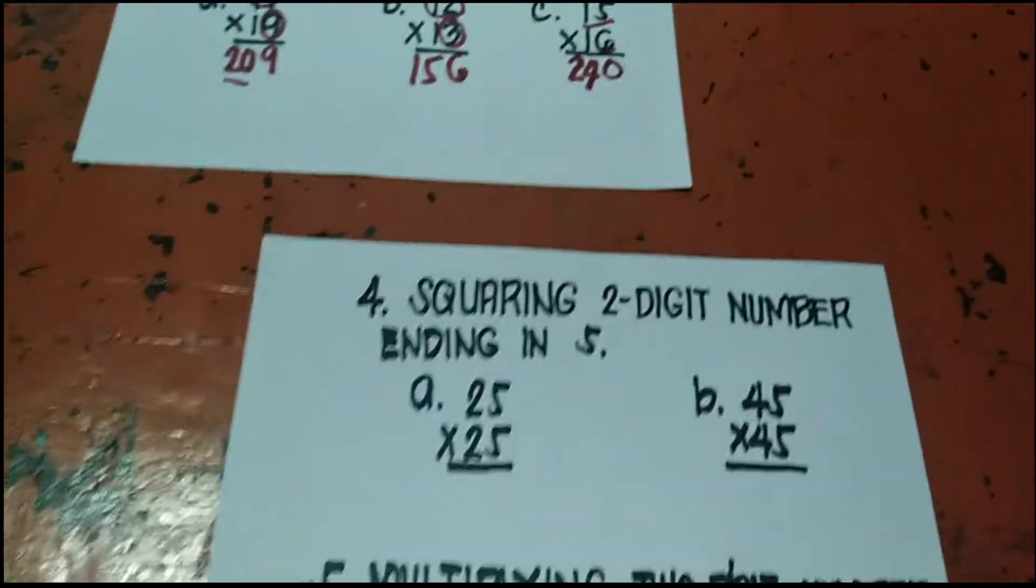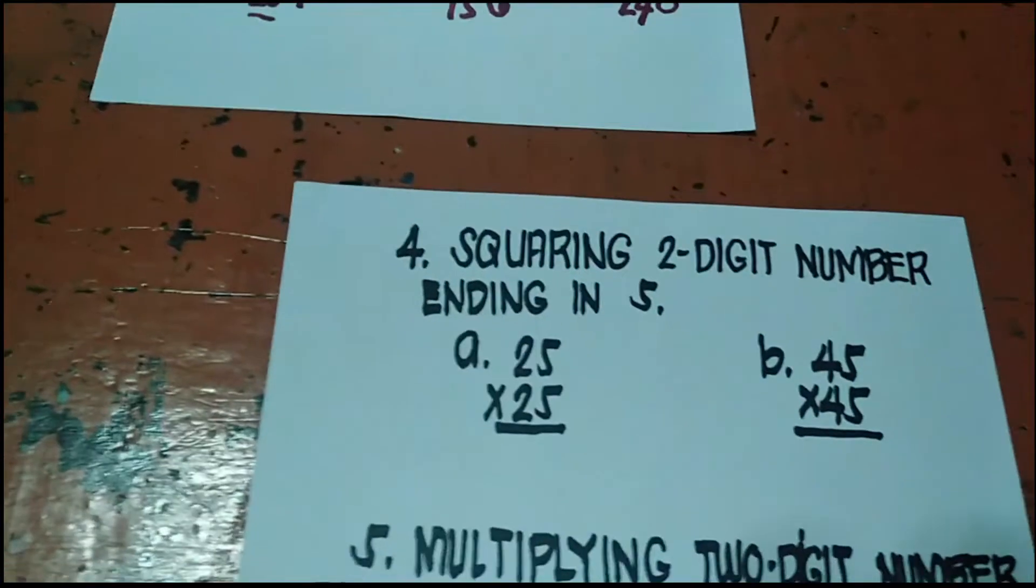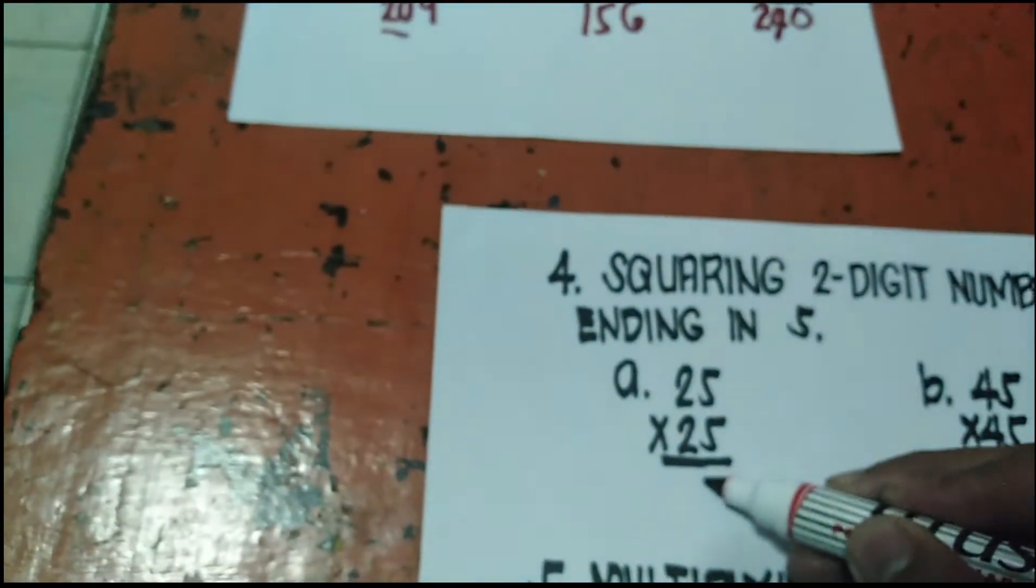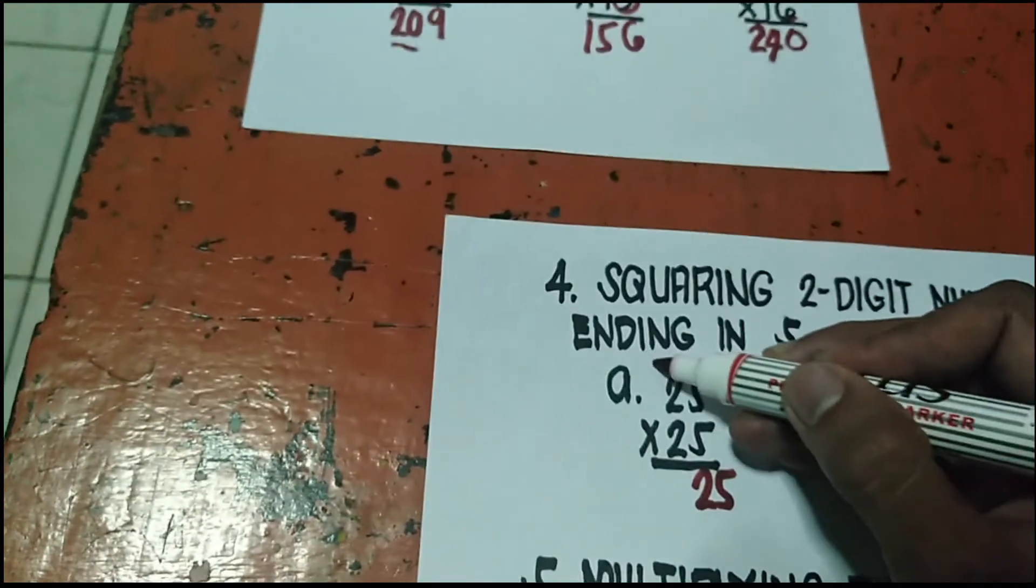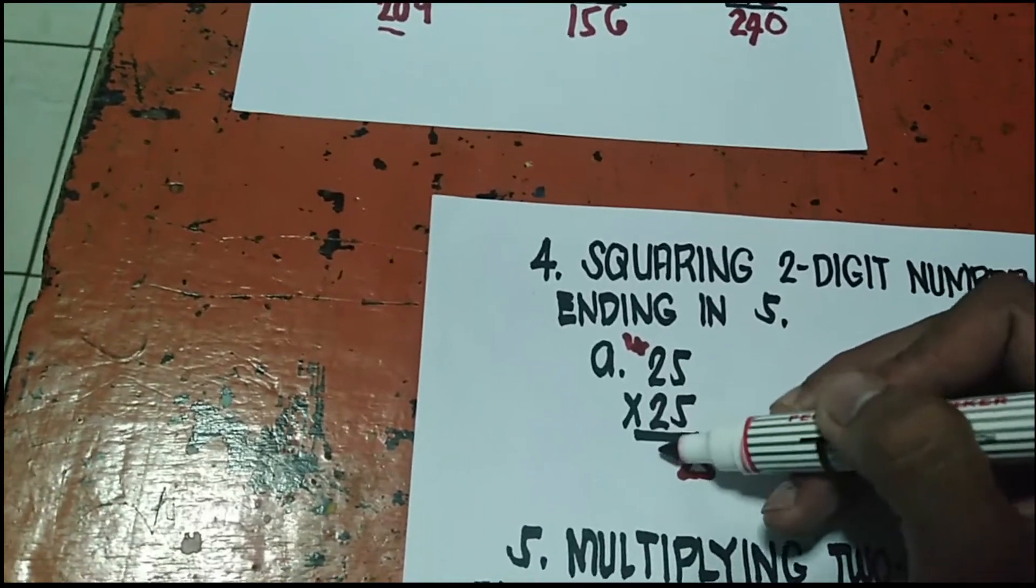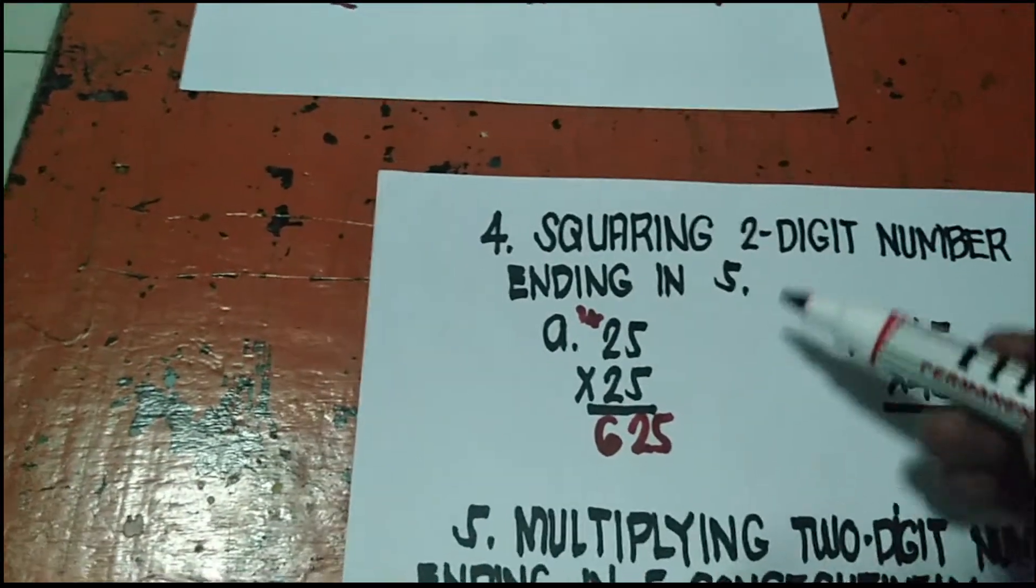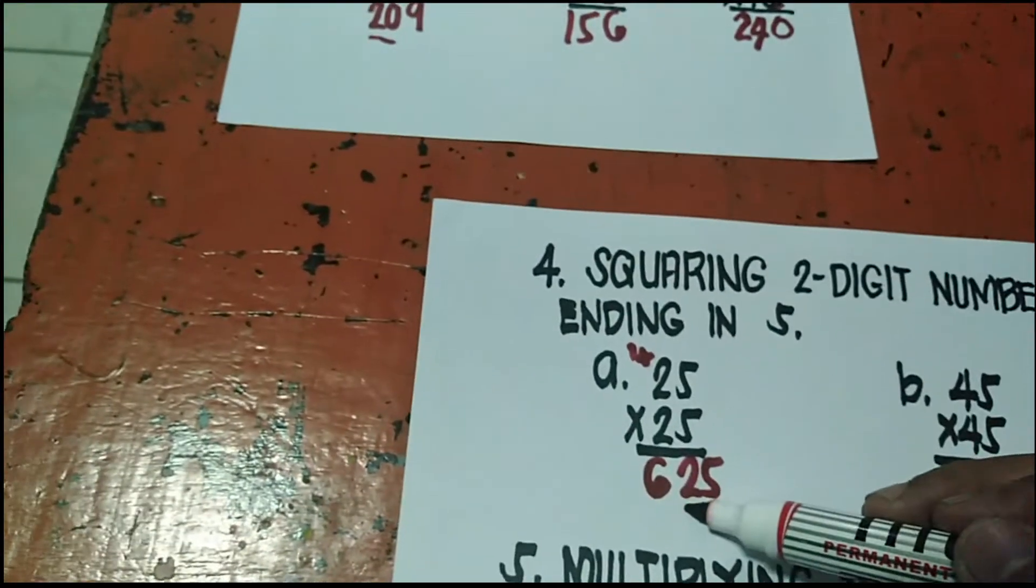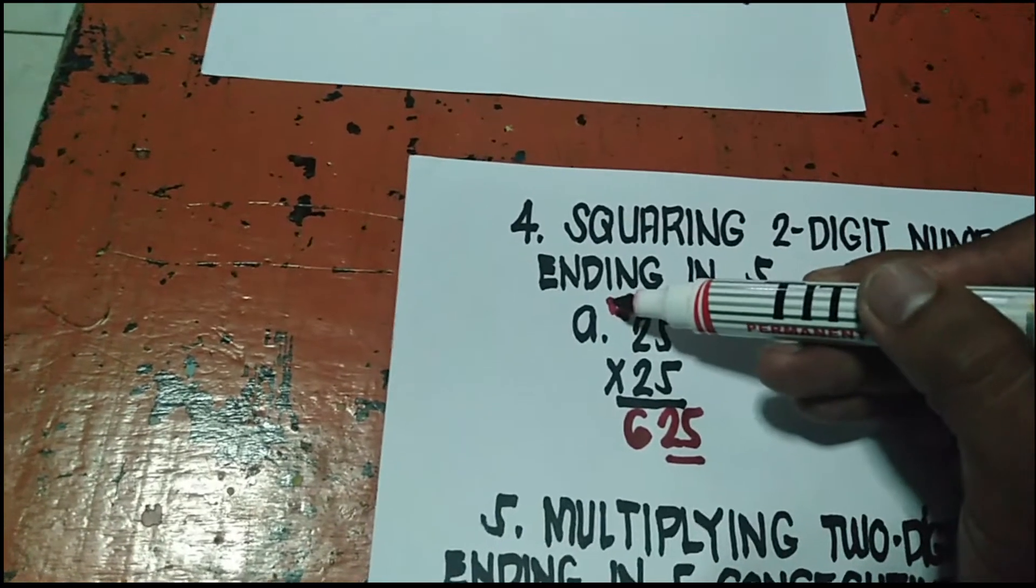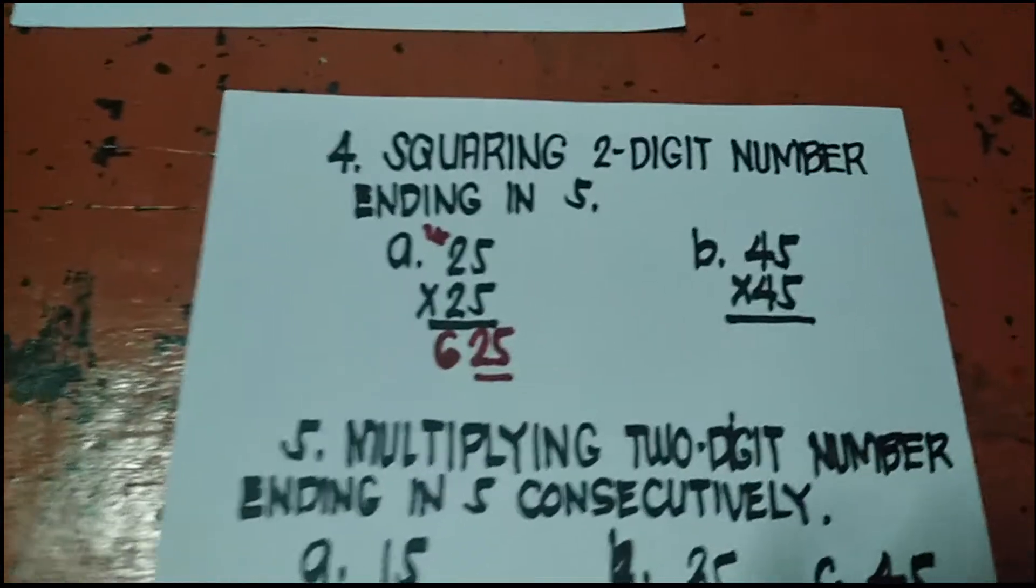Sumunod tayo sa tang 4. Ito na yung palaging lumalabas, squaring 2-digit number ending in 5. So 25 times 25, palaging 25. Sabi ko ito dati, may constant na 1. 2 plus 1 is 3 times 2 is 6. So pag-squaring 2-digit number ending in 5, palaging 25. Palaging may constant na 1. So 2 plus 1 is 3 times 2 is 6. So 625.